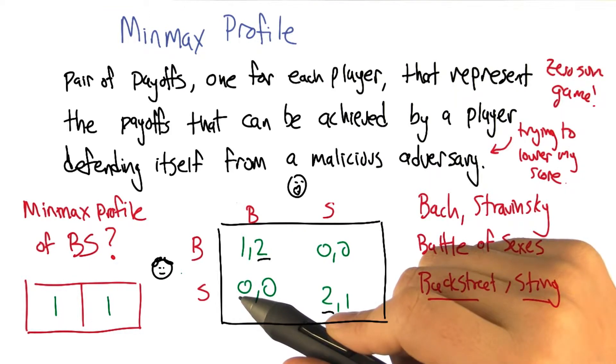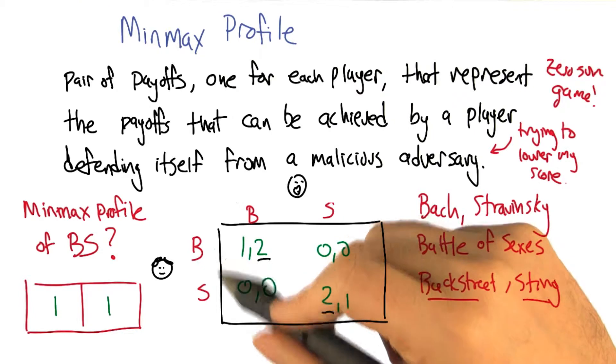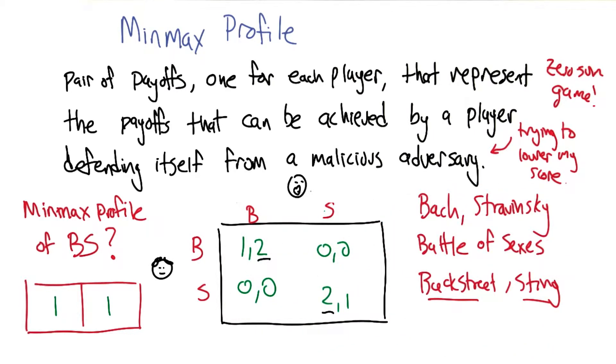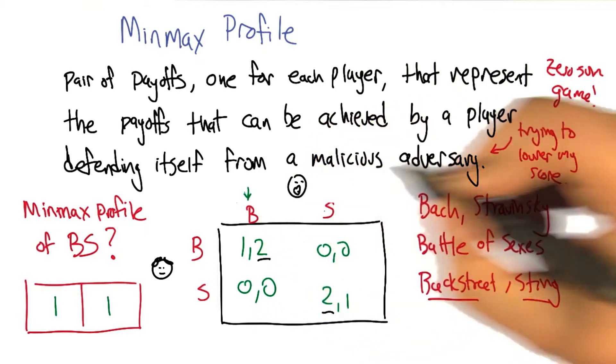Curly gets to choose among rows, and Smooth gets to choose among columns. So if I chose the B column, then Curly could get a 1. Given a choice, Curly would go for the first row instead of the second row, because Curly would get a 1.